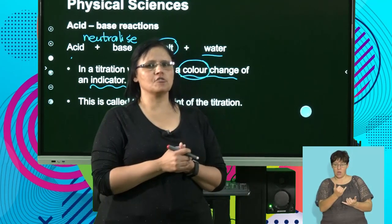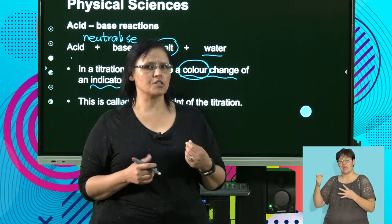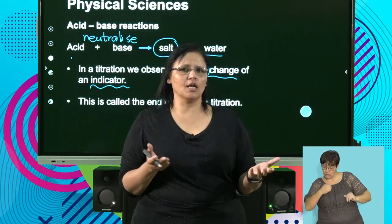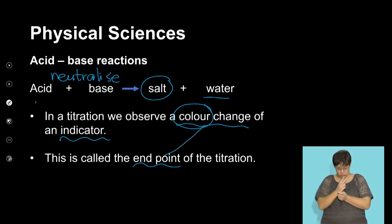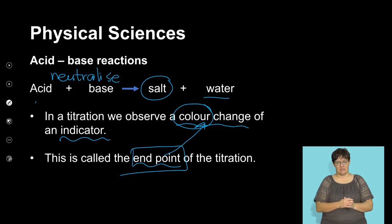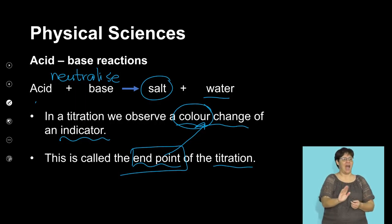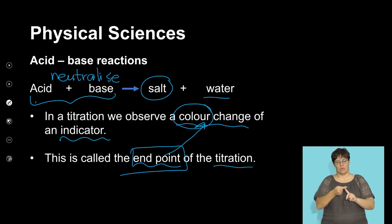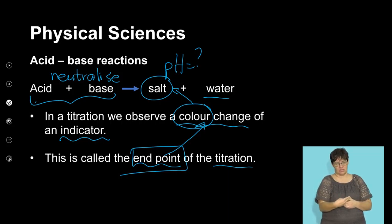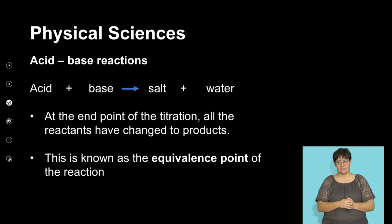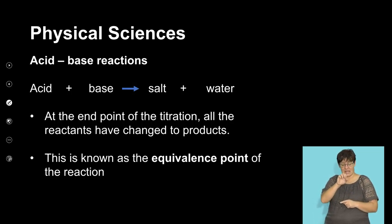We can only see the color change if we have the correct indicators. For every reaction that you have, you must choose the correct indicator, else you will not really know if the endpoint is the correct point. Where that indicator will now have a color change, at that point we know it is the endpoint of our titration. Endpoint means it's the neutralization point of the acid and the base, and that color change will give us a rough idea of the pH of the salt that is formed.